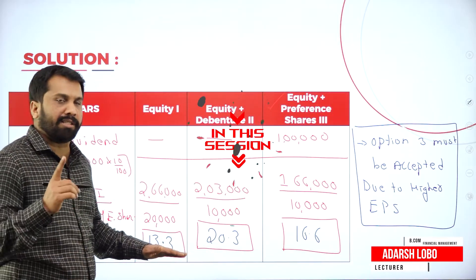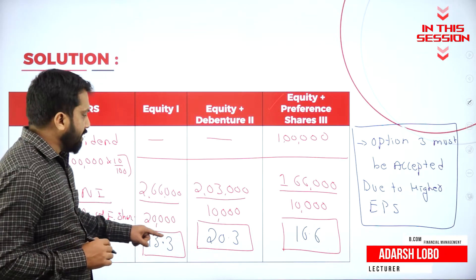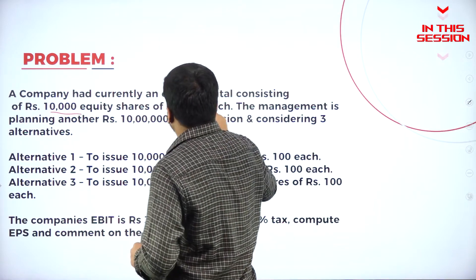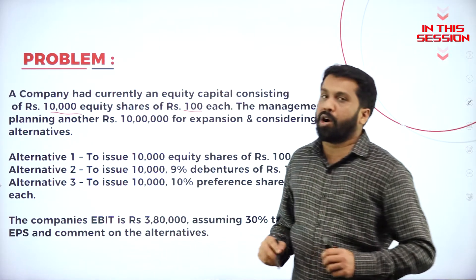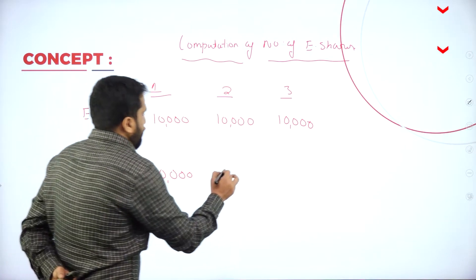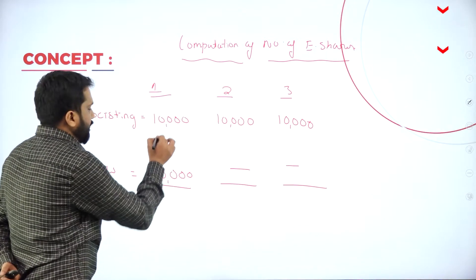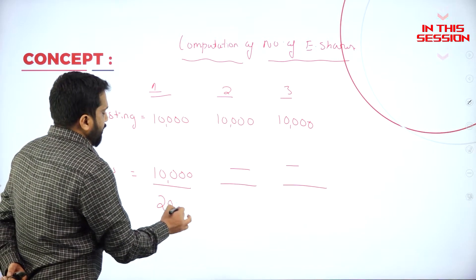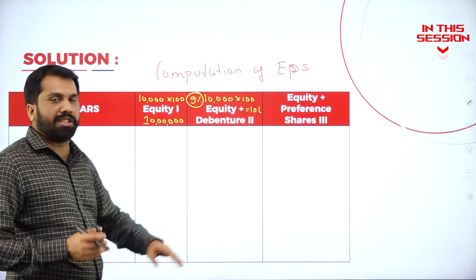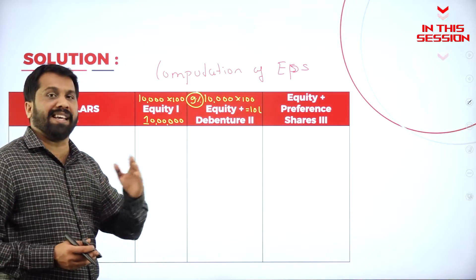Once you're done with your answer, you're supposed to write a conclusion. Conclusion is: out of these three, which is highest? We have 10,000 equal shares, offer base 100 is 10,000 into 100, which is 10 lakh. For this calculation, we don't take the existing equity separately.